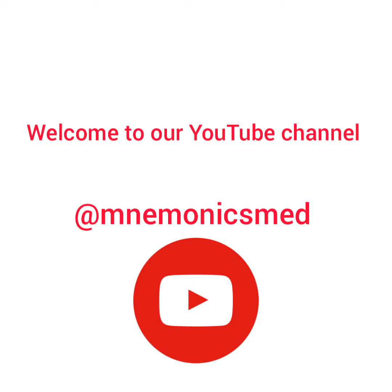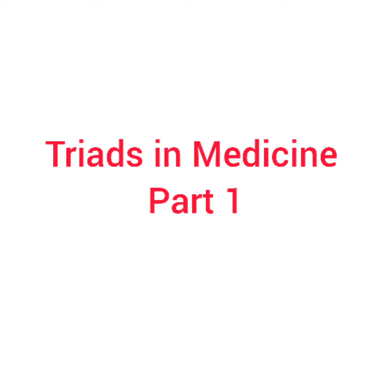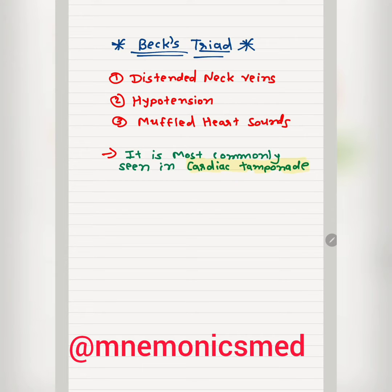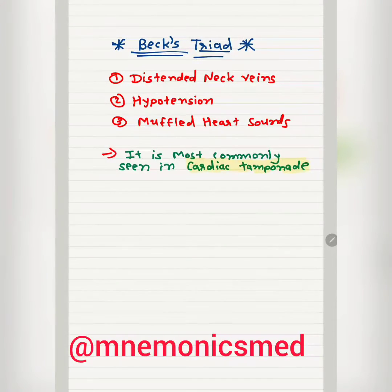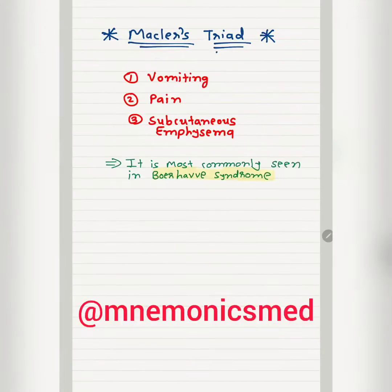Welcome to our YouTube channel Manomics Melt. Today we will learn about important triads in medicine, part one. Beck's Triad has three components: distended neck veins, hypotension, and muffled heart sounds. It is most commonly seen in cardiac tamponade. This is a very important triad and is frequently asked in exams.